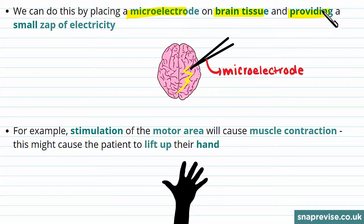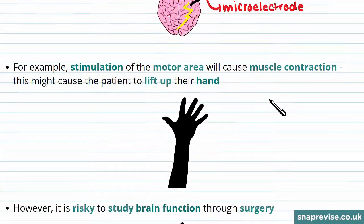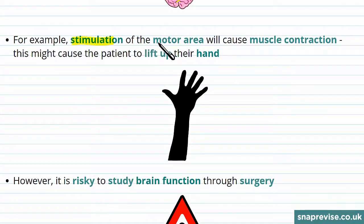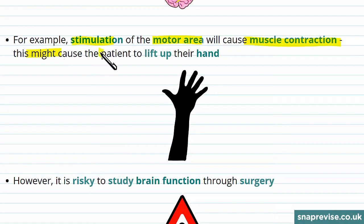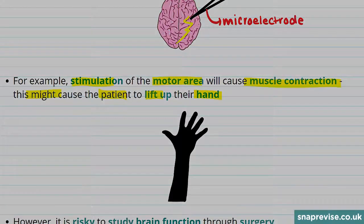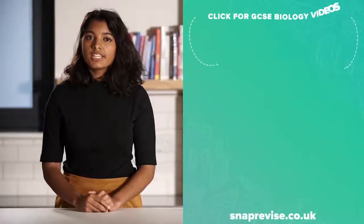For example, stimulation of the motor area will cause muscle contraction, and this might cause the patient to lift up their hand. By the patient lifting their hand up, we know that this part of the brain causes muscle contraction.